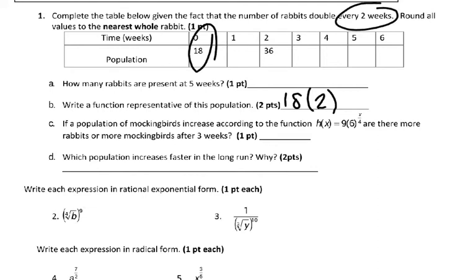And we write this part every 2 weeks as a fraction. And then all we have to do is substitute our values 1, 3, 4, 5, and 6 in where x is and we get our values.